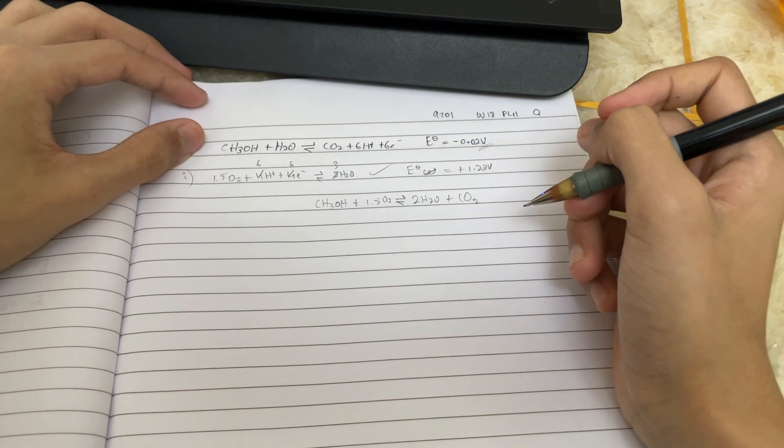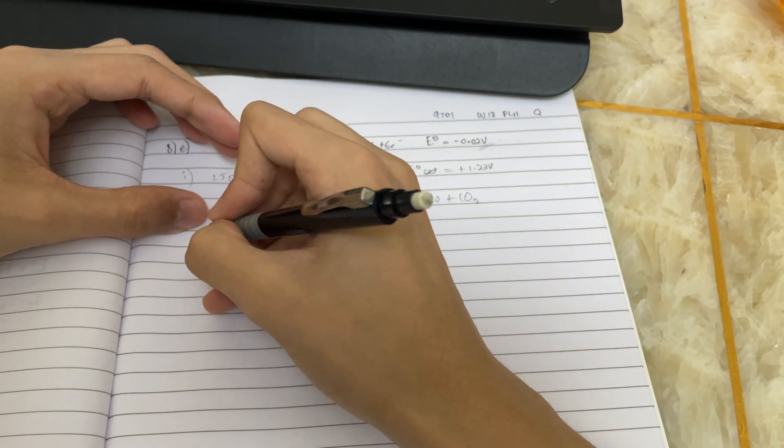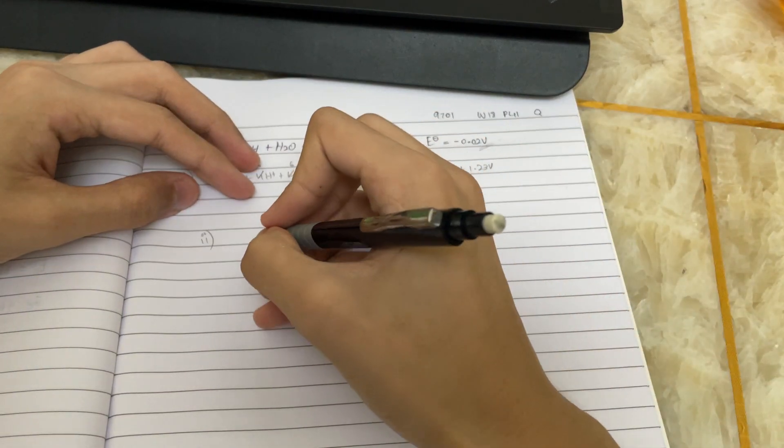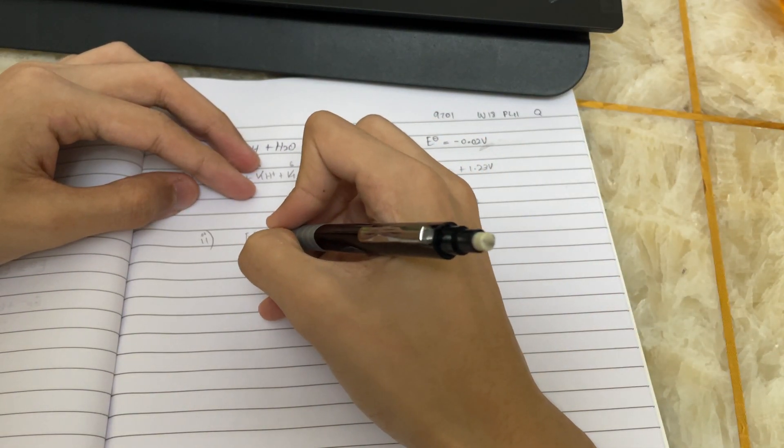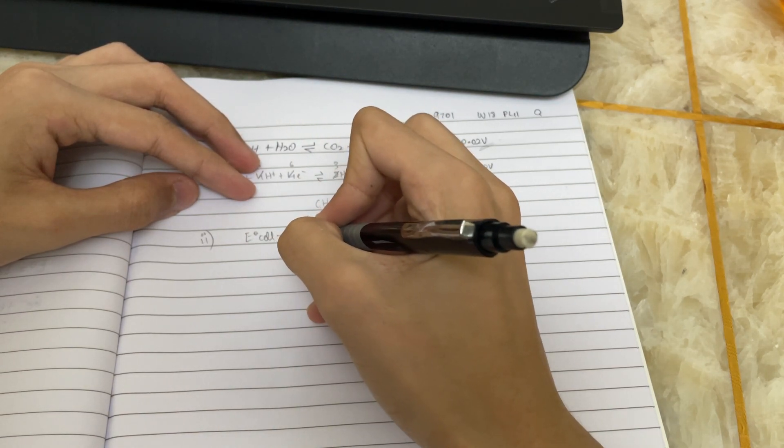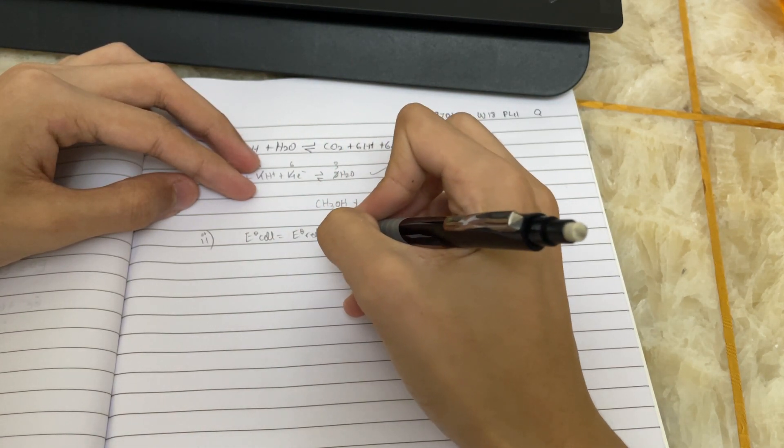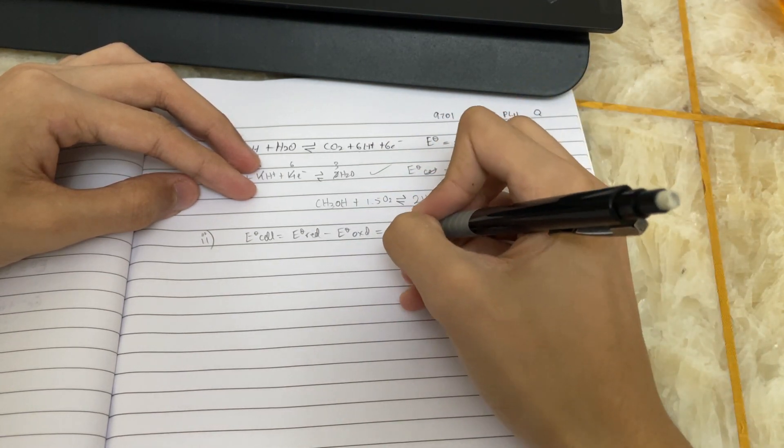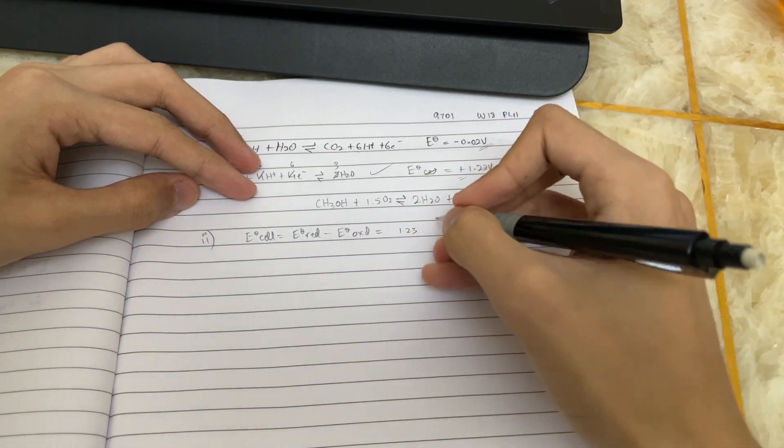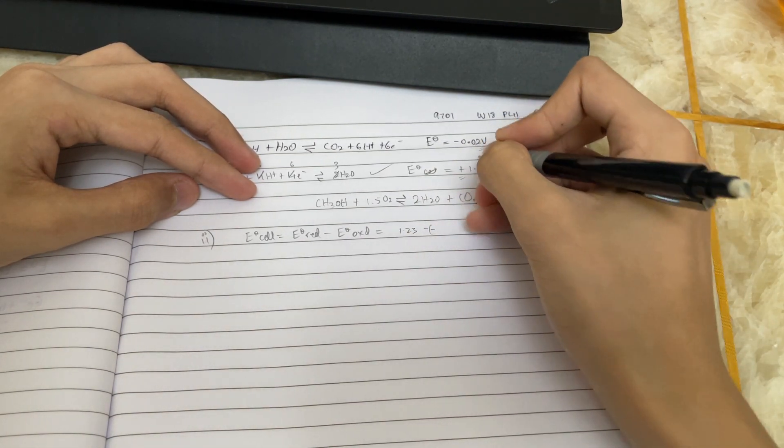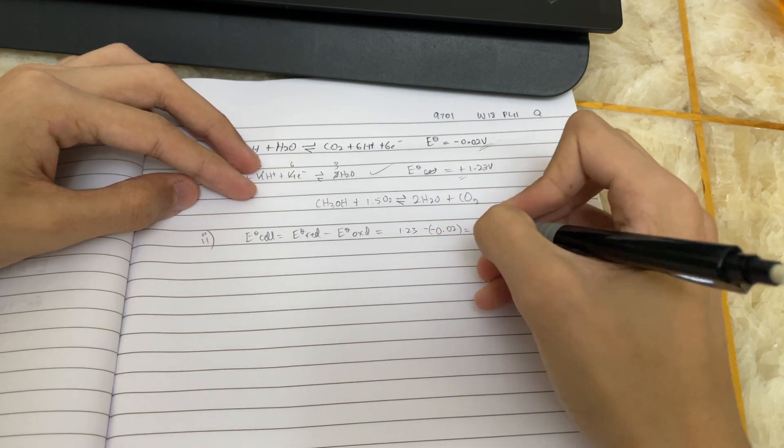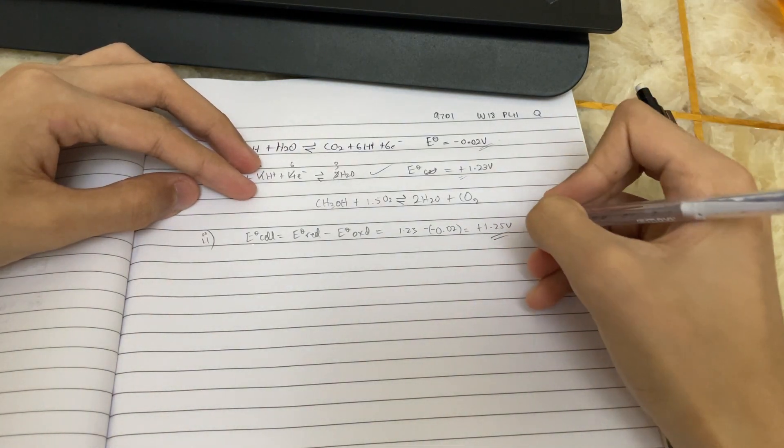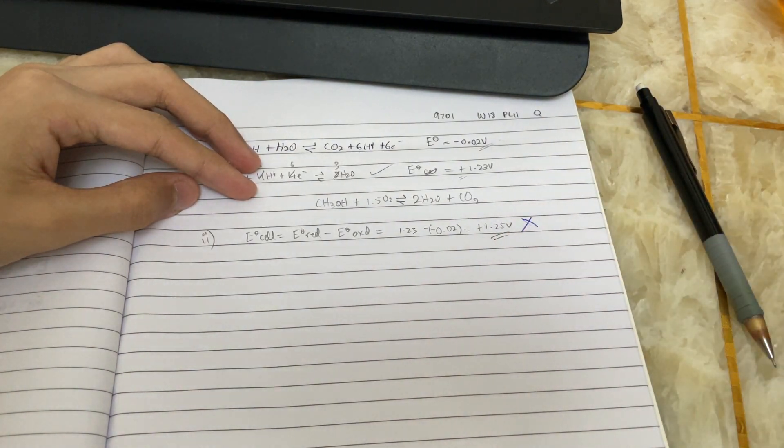So now, this is where, the second part is where students got it wrong. And what they found confusing, or what the most common mistake was. So the formula for calculating E-cell is reduction minus oxidation. So by that rule, this should be 1.23 because higher, it's more positive, so it gets reduced, minus of minus 0.02, which would give plus 1.25, right? Nope. That is wrong. And that is the most common mistake that was made by candidates in this exam.